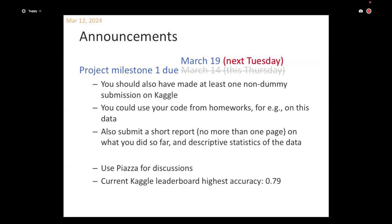The goal for this milestone is that you should have had at least one non-dummy submission on Kaggle. The easiest way to do that is to use the code from your homeworks on the project data. You also have to write a short report — and by short, I mean really short. A paragraph will do.